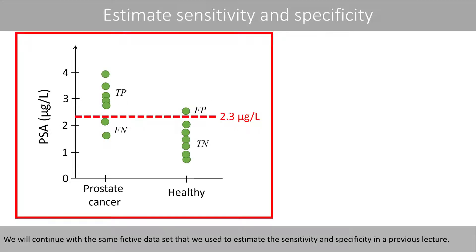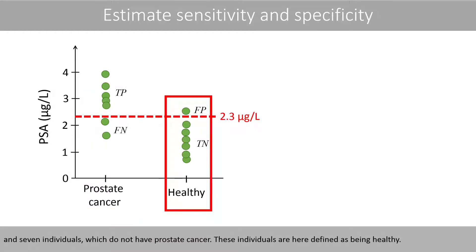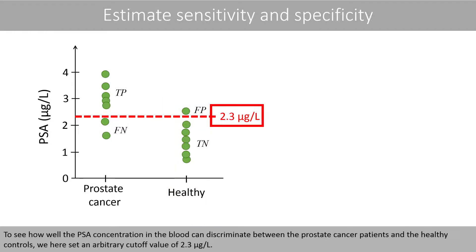We'll continue with the same fictitious dataset that we used to estimate the sensitivity and specificity in the previous lecture. In this example, we have data on the prostate-specific antigen levels, also called PSA levels, for 7 patients with prostate cancer and 7 individuals who do not have prostate cancer. These individuals are defined as being healthy. To see how well the PSA concentration in the blood can discriminate between the prostate cancer patients and the healthy controls, we set an arbitrary cut-off value of 2.3.